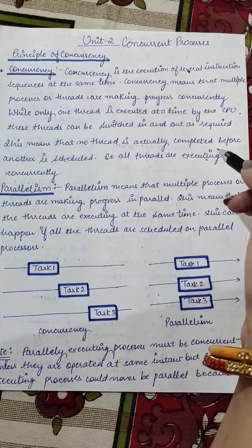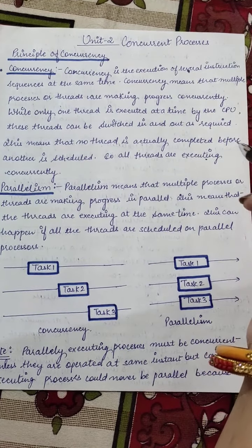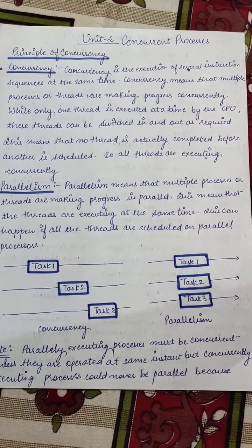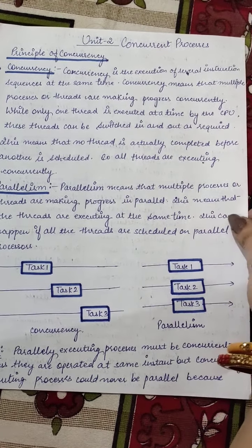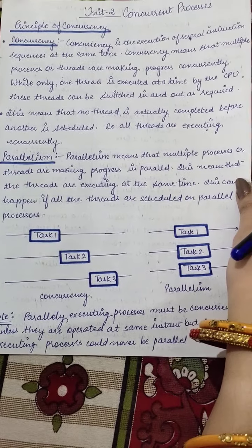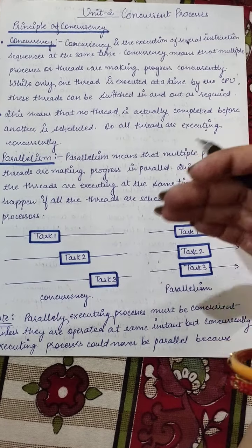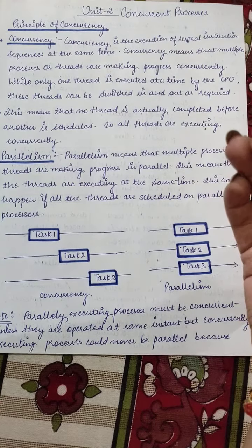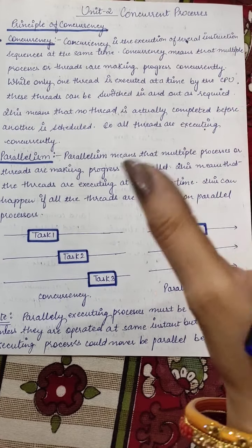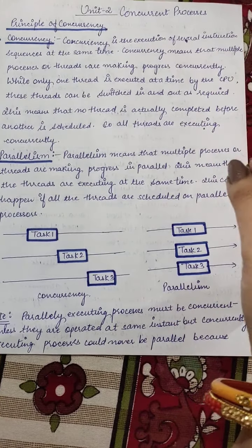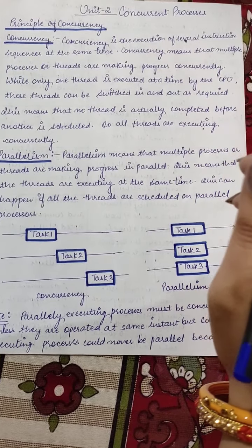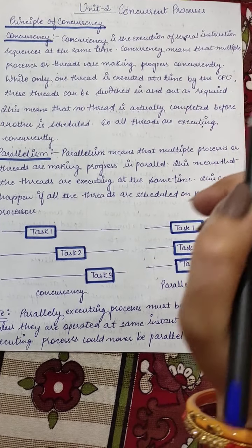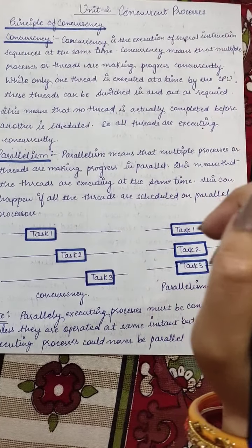While only one thread is executed at a time by the CPU, threads can be switched in and out as required. This means no thread is actually completed before another is scheduled — so all the threads are executing concurrently. They are in different phases but being managed and handled at the same time, though they are not all running on the CPU simultaneously.